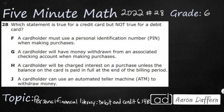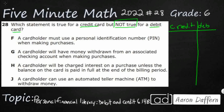So, we need to find a statement that is true for credit, but not true for debit. What I'm going to do here is make a little t-chart off to the side. We'll label it credit and debit, and we'll read each of these statements and see if they are true.